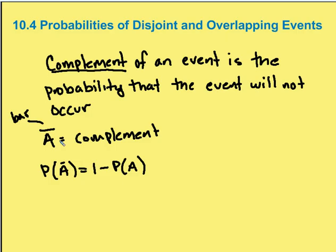So the probability of A bar is equal to 1 minus the probability of A. So the probability that something will not happen is 1 minus the probability that it will happen.